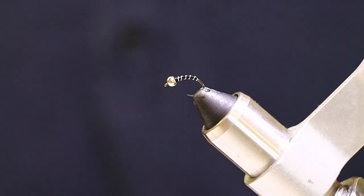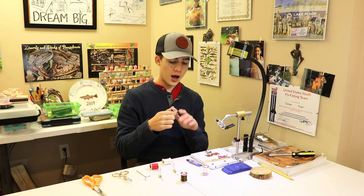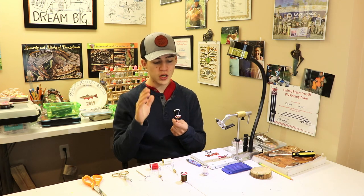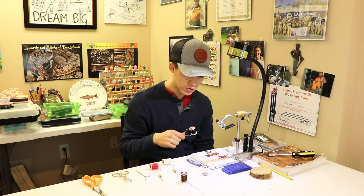So again this is a zebra midge. Just to quickly go over what we're going to be using for this fly. We're going to be using a 70 odd ultra thread black thread. It's already in my bobbin. That's what we're going to be using for thread.